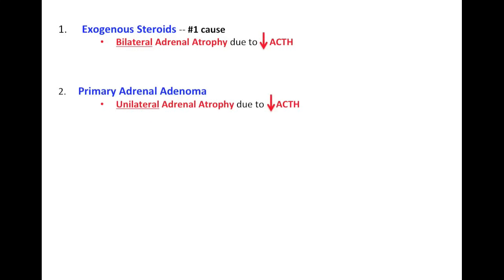The second cause is a primary adrenal adenoma. In this case, one adrenal gland has the adenoma and is secreting a lot of cortisol, which negatively feeds back to the hypothalamus and anterior pituitary, leading to decreased ACTH. The normal adrenal gland becomes atrophied, while the one with the adenoma undergoes hyperplasia because it doesn't depend on ACTH. So this results in unilateral adrenal atrophy, compared to exogenous steroids which cause bilateral adrenal atrophy.